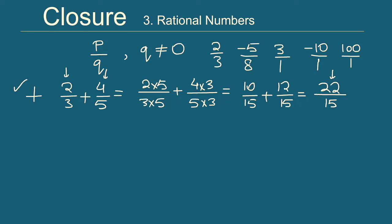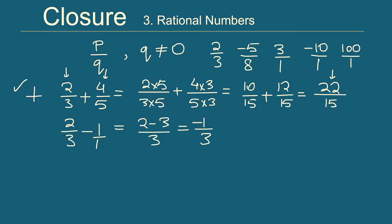Now let's look at subtraction. Take 2/3 and subtract the number 1, written as 3/3. This becomes 2 minus 3 over 3, which is minus 1/3 — a rational number. Whenever we subtract one rational number from another we get a rational number, so rational numbers are closed under subtraction.